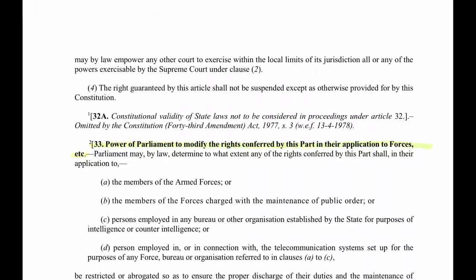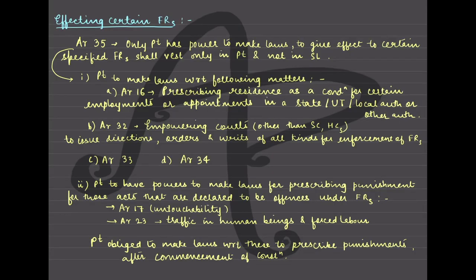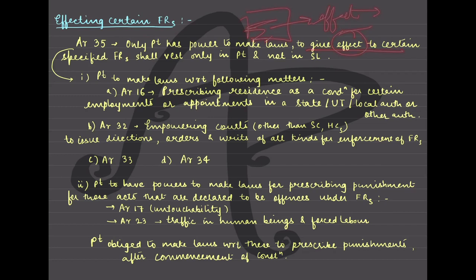Looking at the book description for a simpler understanding: Article 35 firstly makes very clear that only Parliament — not the state legislature — has the power to give effect to certain fundamental rights. Some rights are not self-executing; they need to be implemented with the help of certain legislation. That power rests only with Parliament, not with state legislatures.